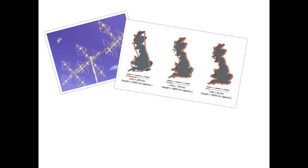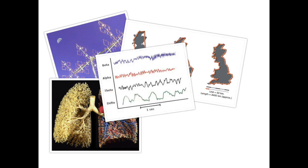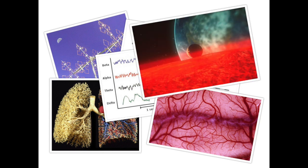Fractals help doctors and scientists understand the body's way of operating by the way different structures look — for example, the bronchial tubes in our lungs, the dynamics of the rhythms of our brain, and the blood vessels throughout our body. And one of the first applications of fractals in computer animation was in the movie Star Trek 2: The Wrath of Khan.